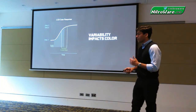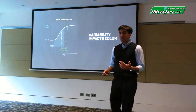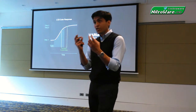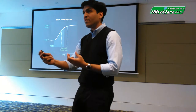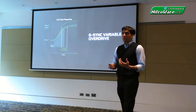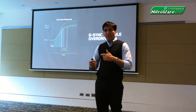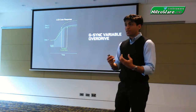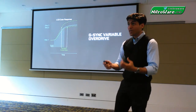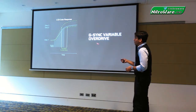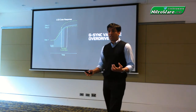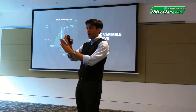This problem becomes very difficult with variable refresh because now your frame rates are changing, which means the time that the pixel has to respond is also changing from frame to frame. To solve this problem, we have come up with something called variable overdrive. In the background of the game, we are running sophisticated heuristics to predict what the frame time is going to be for each pixel. Based upon that prediction, we are applying an overdrive value calculated ahead of time. That way, users never see things like ghosting or blurring at the edges of fast moving objects.